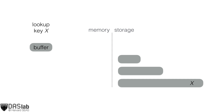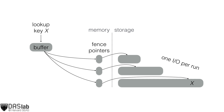In order to search for a key, we start by looking for it in the buffer, and then we search the different runs from smallest to largest until we find the key we're looking for. To help with this search, key-value stores store arrays of fence pointers in main memory. These fence pointers store min-max information about the keys in every disk block of every run, and they allow us to access the relevant page in every run using just one direct I/O.